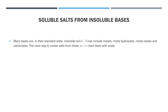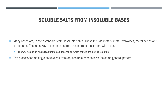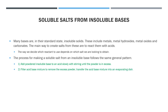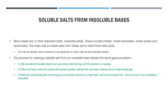This is all well and good for salts formed from soluble bases, but many bases are in fact insoluble. Therefore, the process for producing salts from insoluble bases is slightly different. To start with, we have to add the powdered form of the insoluble base to the acid until the powder doesn't disappear anymore. At this point, the powder is in excess to the acid, meaning there is more base than acid. We then filter the mixture to remove the excess powder, leaving just the salt and water solution. We can then put the solution into an evaporating dish and gently heat it in a water bath until small crystals form. At this point we consider the mixture saturated. If we then leave it at room temperature for a few days, larger crystals will form. These can then be dried to give the pure form of the salt.